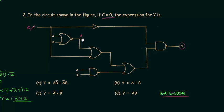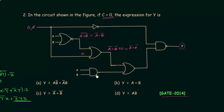The output of the NOR gate is (a OR b)' which equals a' AND b'. Now for the OR gate, the first input is a' AND b' and the second input is c, which equals 0. So the output is simply a' AND b' OR 0 = a' AND b'. The output of the AND gate is a AND b.